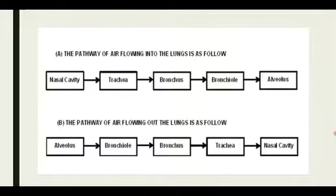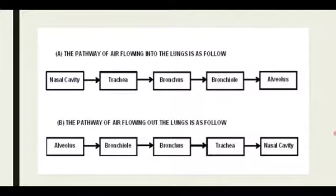Now I will explain how oxygen comes to the cell and how carbon dioxide goes out. When the diaphragm goes down, the volume of the lungs increases. Atmospheric air enters through the nose, then goes to the trachea, bronchus, bronchioles, and reaches the alveoli in gaseous form. Alveoli have many blood capillaries. When oxygen enters the alveoli, it combines with the hemoglobin of the RBCs in the blood and forms a temporary compound called oxyhemoglobin. This oxyhemoglobin is formed in all alveoli of the lungs.